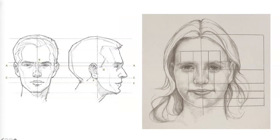We're looking at the standard human facial proportions here. I want to break down what we're looking at. For example, the eyes are in the middle of the head — halfway between the top of the head and the chin — and the nose is situated halfway between the eyes and the chin. Looking even more closely, the mouth lies about halfway between the top of the chin and the bottom of the nose.